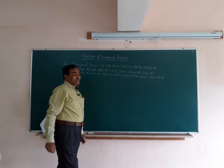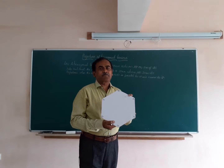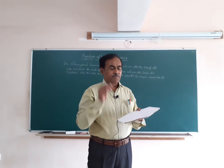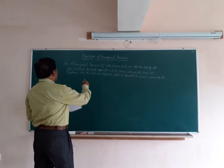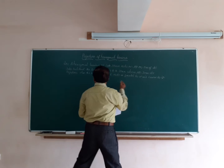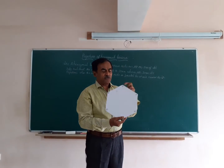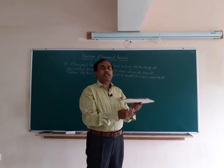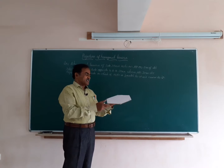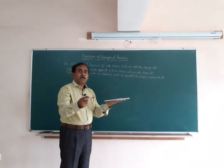A hexagonal lamina is a very thin plate which has negligible thickness compared to its lateral dimensions, so it can be considered as a thin plate. In this problem, the lamina has a side of 30 mm and rests on HP on one of its sides. There is a hexagonal lamina ABCDEF, each side measuring 30 mm, resting on HP on one of its sides.